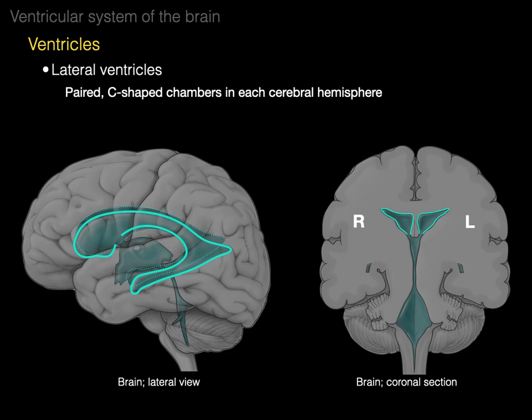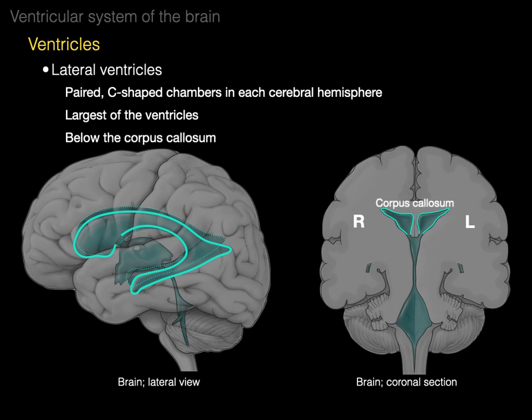There are two lateral ventricles — first and second, it doesn't really matter. There are just two lateral ventricles, which is why we have a third ventricle. The lateral ventricles are the largest out of all the ventricles, far bigger than the third and the fourth ventricle, and they are below the corpus callosum. In this coronal section, there's the corpus callosum and the lateral ventricles sit right below that large commissure.